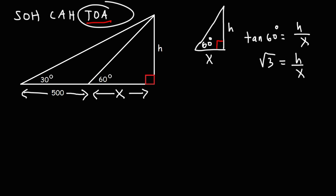And that's equal to h divided by x. Now the next thing we want to do is we want to isolate the variable h. So I'm going to multiply both sides by x. So we can say that h is equal to the square root of 3 times x. And we're going to save this equation for later.